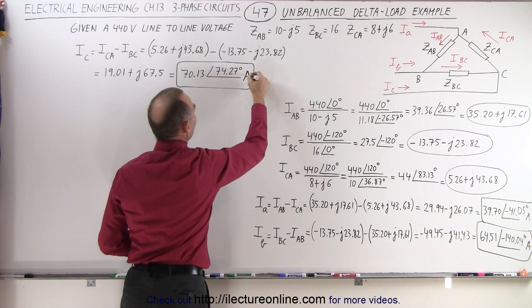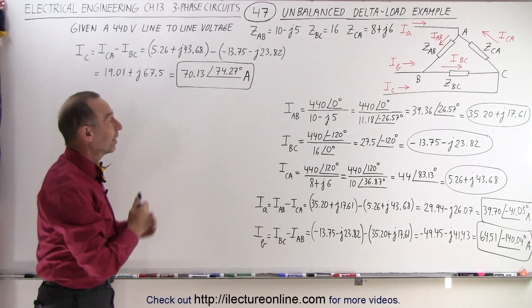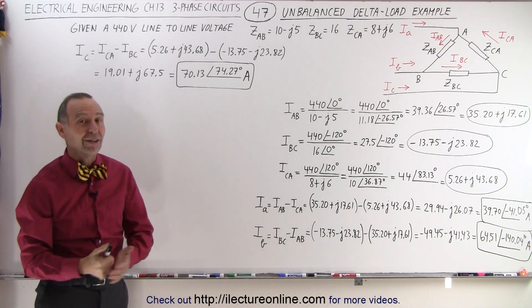Of course, these are amps. So those are then the three line currents feeding the delta load, and that is the procedure you follow to get those three currents. That's how it's done.